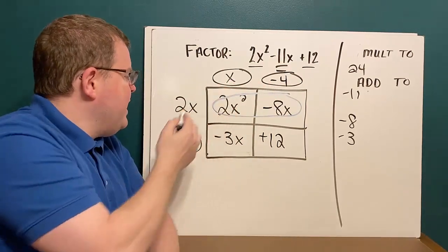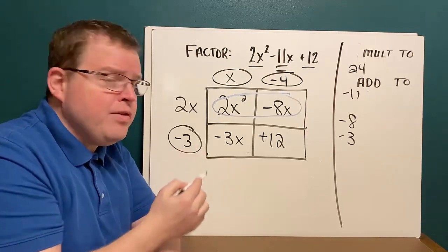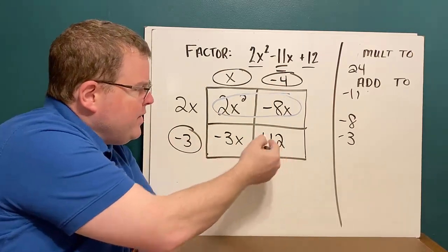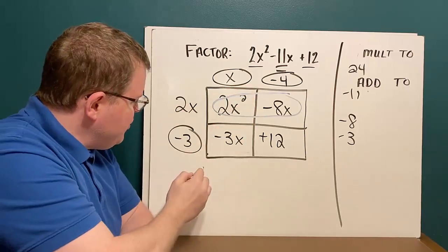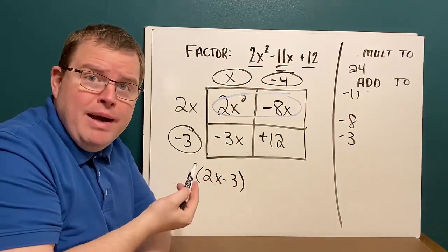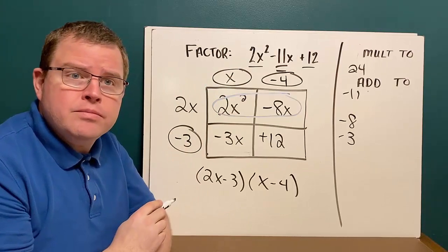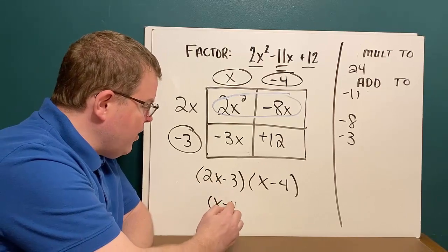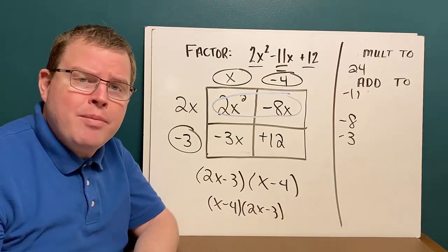Now for the bottom left: x times something is negative 3x — x times negative 3. And I can check: negative 4 times negative 3 does multiply to positive 12. Now I go on the outside to get my factors. I have 2x minus 3 as my first binomial and x minus 4 as my second binomial — that is the factored form. A common question is whether the order matters. Could I write x minus 4 times 2x minus 3? The answer is absolutely yes, by the commutative property of multiplication.